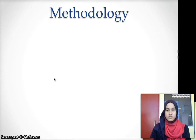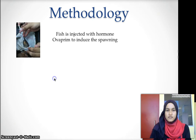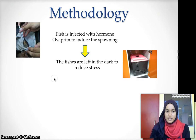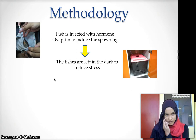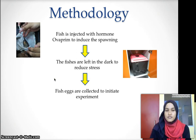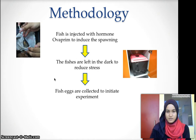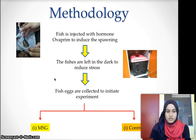For the methodology, the fish are injected with a brain hormone to induce spawning. Then the fish are left in the dark to reduce stress. Finally, the fish eggs are collected to initiate the experiment. The experiment consists of two groups: MSG and the control.